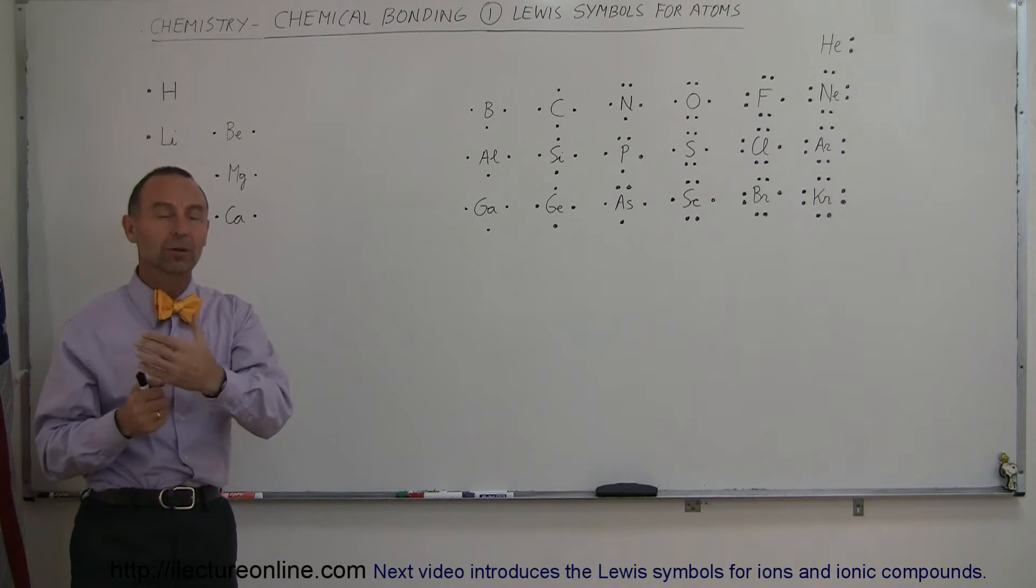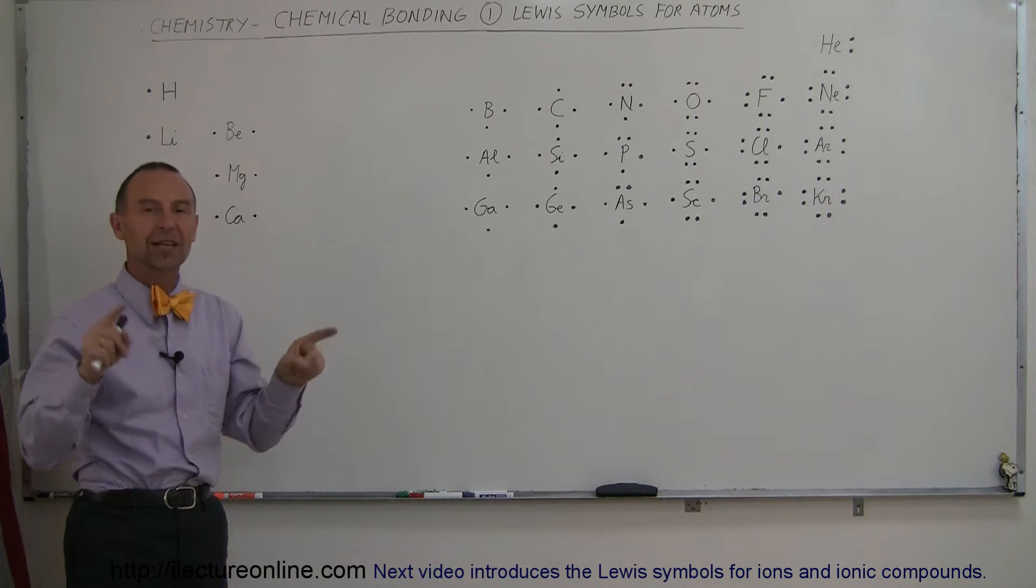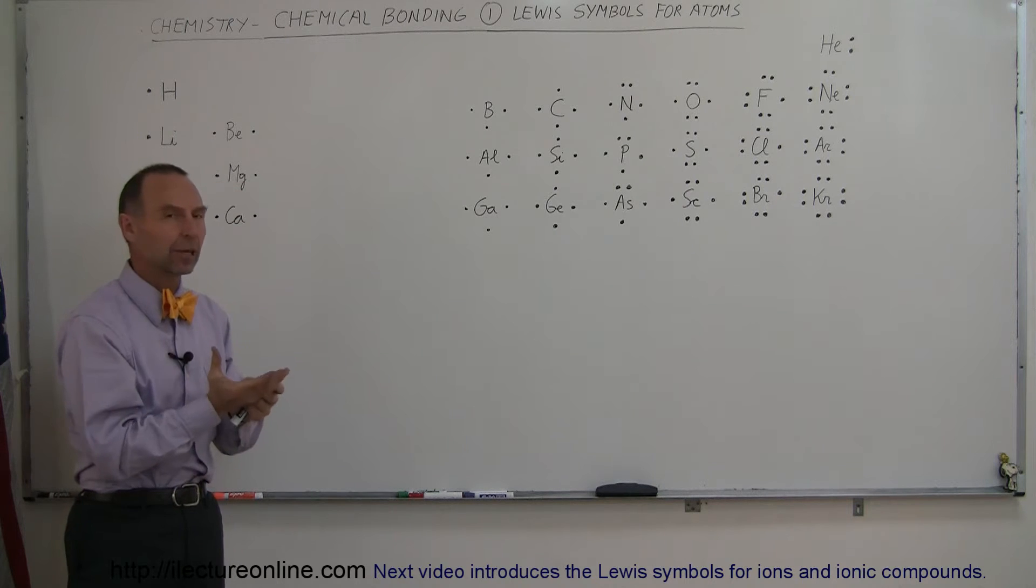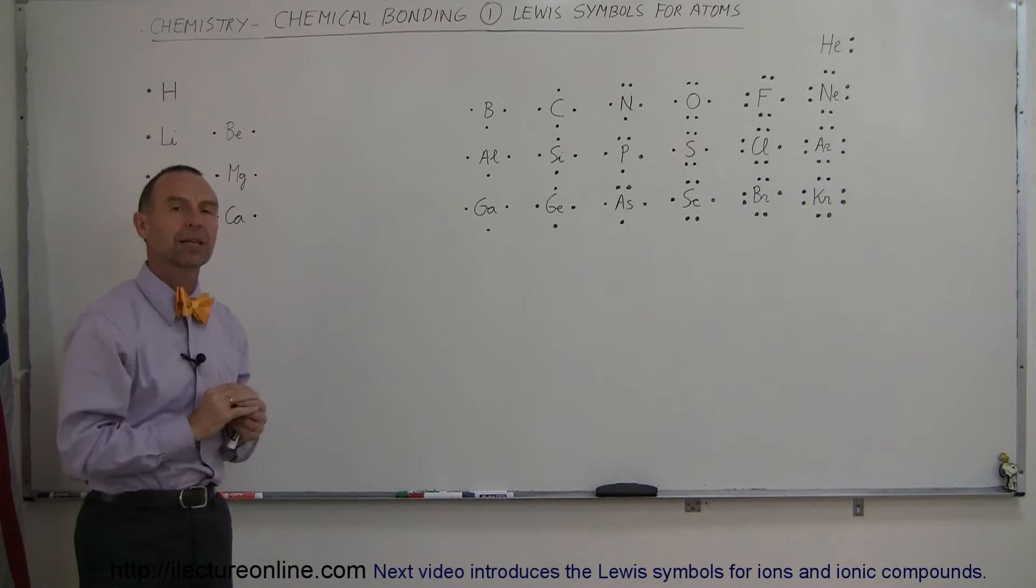Why does one atom bond with another? Well it has a lot to do with the valence electrons. The valence electrons are the electrons in the outermost energy level that are populated in that particular atom.